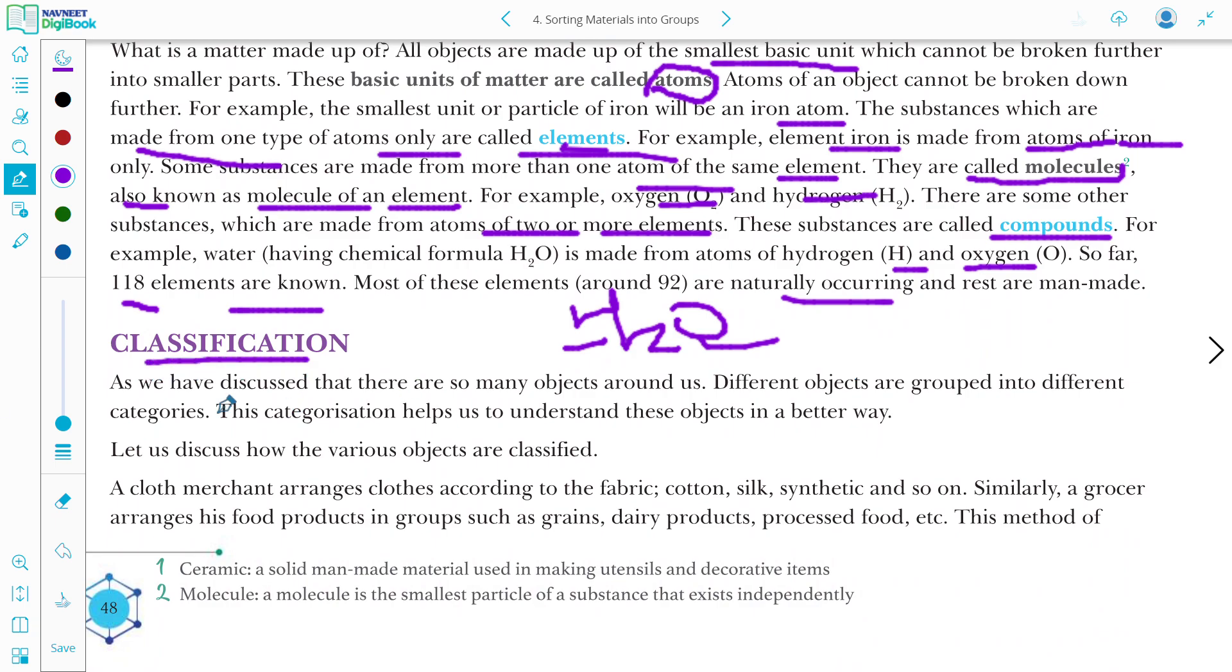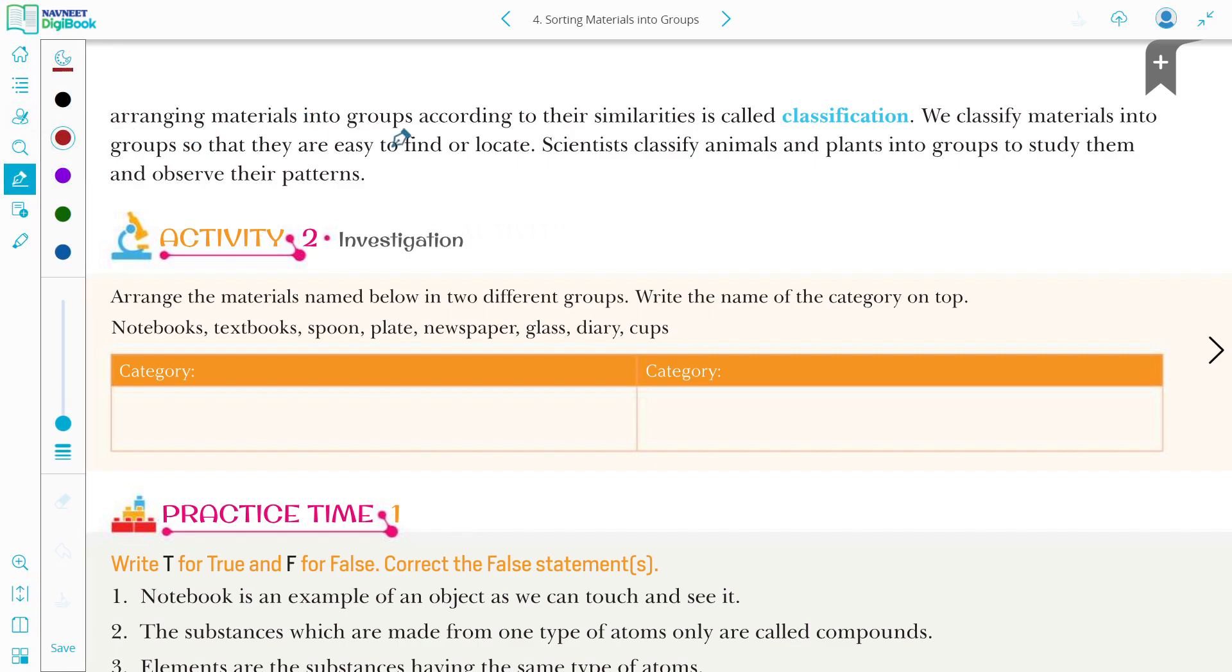Classification. If we talk about classification, to classify something or to group objects or make their categories, we call it classification. We have discussed that there are so many objects around us. Different objects are grouped into different categories. These categories help us to understand these objects in a better way. Let us discuss how various objects are classified. A cloth merchant arranges clothes according to fabric, for example cotton, silk, synthetic and so on. Similarly, a grocer arranges his food products in groups such as grain, dairy products, processed food. This is the method of arranging materials into groups according to their similarities.